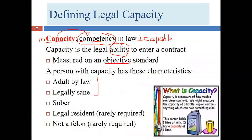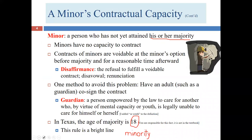Bob may have more ability to enter into contracts than the average 30-year-old, but the problem isn't his inherent ability — it's his legal ability. The law would say: Bob's under 18, that's all I need to know. We don't care how smart you are, how much life experience you have, or how good your judgment is. It's an on-off switch, not a dimmer switch. At 12:01 a.m. on Bob's 18th birthday, his contractual capacity will descend upon him, but not a moment before.